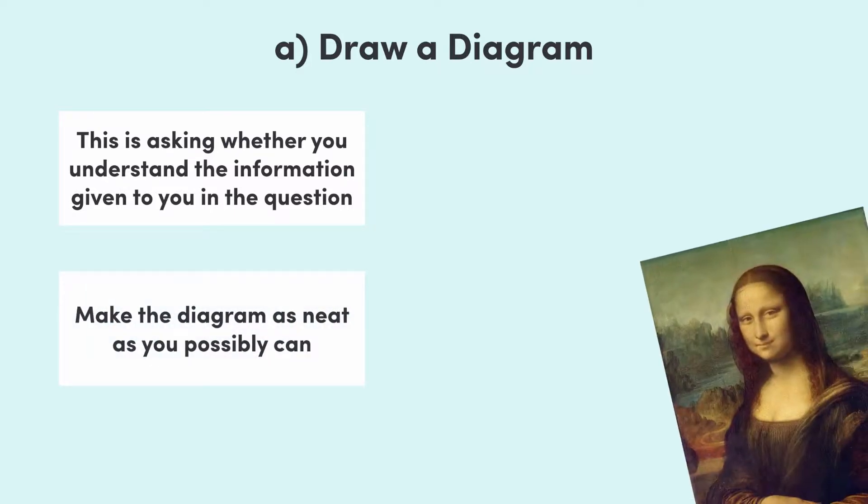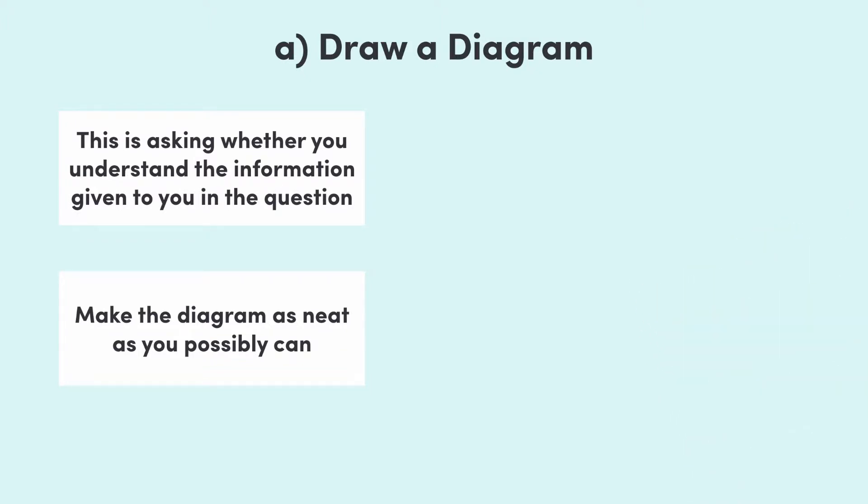The first part here, A, is the least physics-y of them all. It's just trying to find out whether you understand the information in the question. Even though you don't need to create the next Mona Lisa, it's good to make your diagram as neat as possible. Here's what it should look like. The key features to include are the height of the cliff, the initial velocity of the textbook with its angle above the horizontal, and its path, which should look like part of a parabola. There we go, basically a free mark.